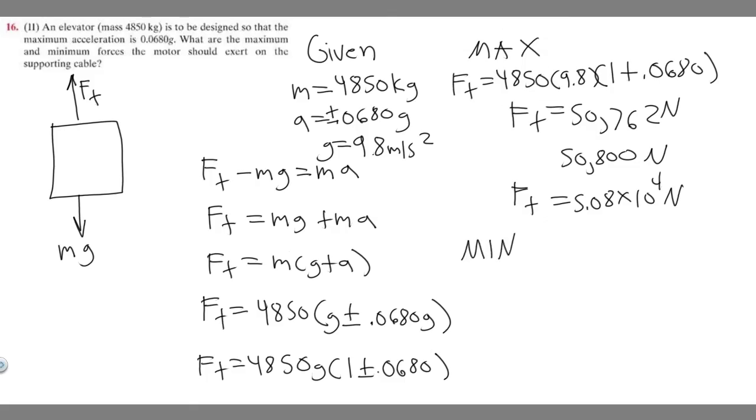Now let's do the minimum. F_T is going to be the same exact thing except we're minusing. So 4,850 times 9.8 times (1 minus 0.0680). You're going to get 44,297.96 newtons, and we can round this to 44,300.